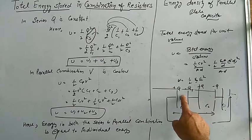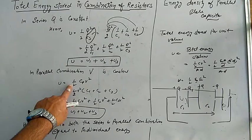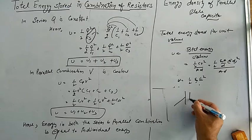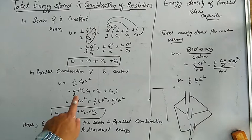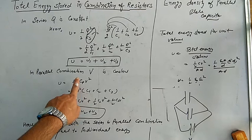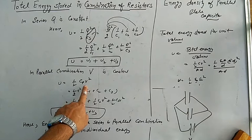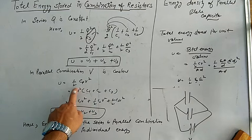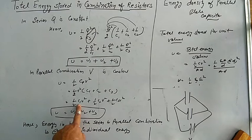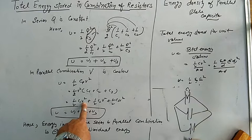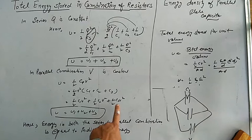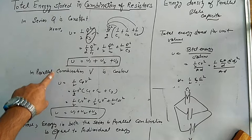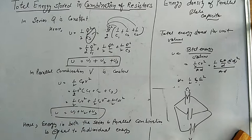In parallel combination, the voltage (potential) across all capacitors is the same, but charges are different. Using the formula ½CV², the total energy is ½C1V² + ½C2V² + ½C3V², since total capacity in parallel is C1+C2+C3. Again we find ½C1V² + ½C2V² + ½C3V², which is the sum of individual energies. So whether connected in series or parallel, the total energy equals the sum of individual capacitor energies.